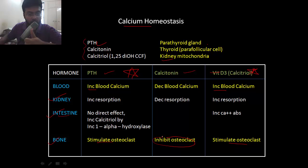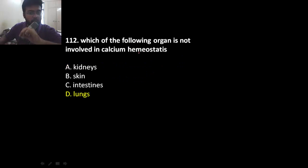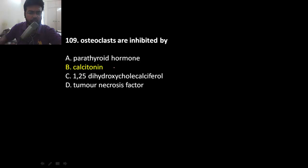Calcitonin stimulates osteoblasts and decreases blood calcium level. In an MCQ: calcitonin is secreted by parafollicular cells of the thyroid gland. Regarding what is not involved in calcium homeostasis — the kidney activates vitamin D, the skin synthesizes vitamin D by converting 7-dehydrocholesterol to cholecalciferol, and the intestine helps in calcium absorption. That leaves the lungs as the correct answer.